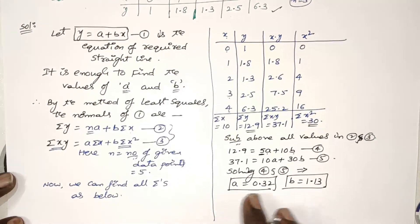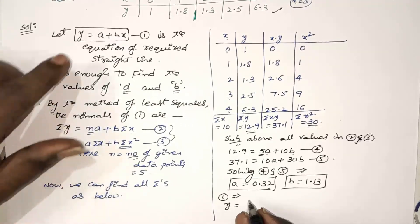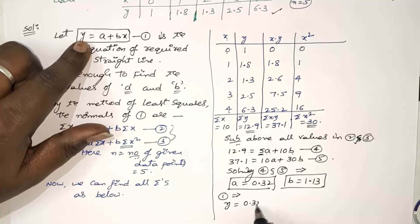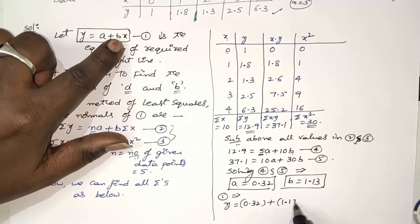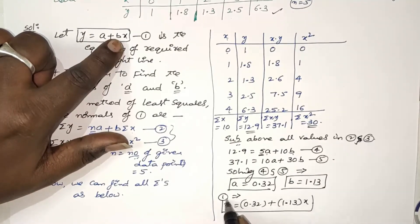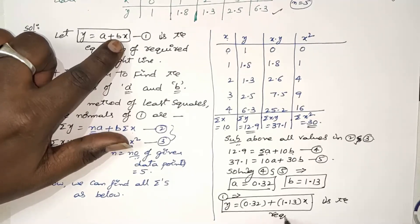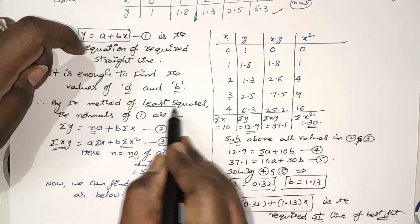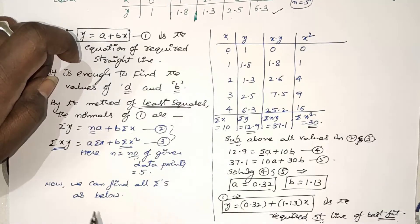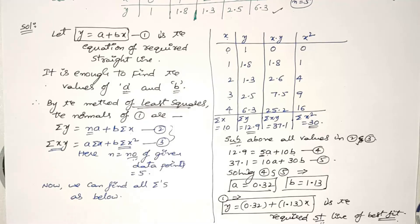Finally, replace a and b values in equation 1: y = 0.32 + 1.13x. This is the required straight line of best fit for the given data. Whenever we use the method of least squares, we will surely get the best equation of the straight line — no doubt at all. That's why this method of least squares is very important. In the next video, I will give some more problems on curve fitting. Thank you very much.